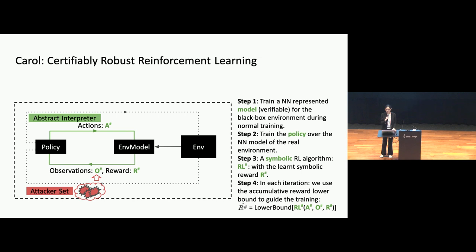After this loop, we get a symbolic representation of the reward from which we can easily extract the lower bound of the reward. There are two benefits from this lower bound. First, it gives us a way to verify the performance of a neural network — the lower bound of the reward shows the worst-case performance of a policy under attacks. Second, we also utilize this lower bound of the rewards to guide training: we maximize the lower bound reward for the policy so that we naturally obtain a more certifiable policy.